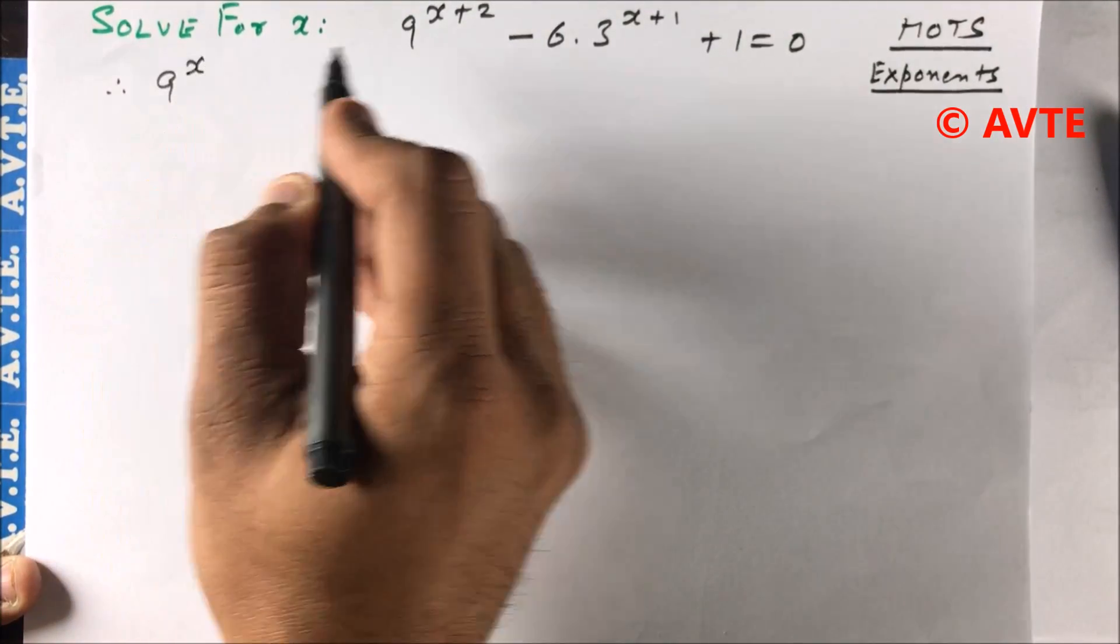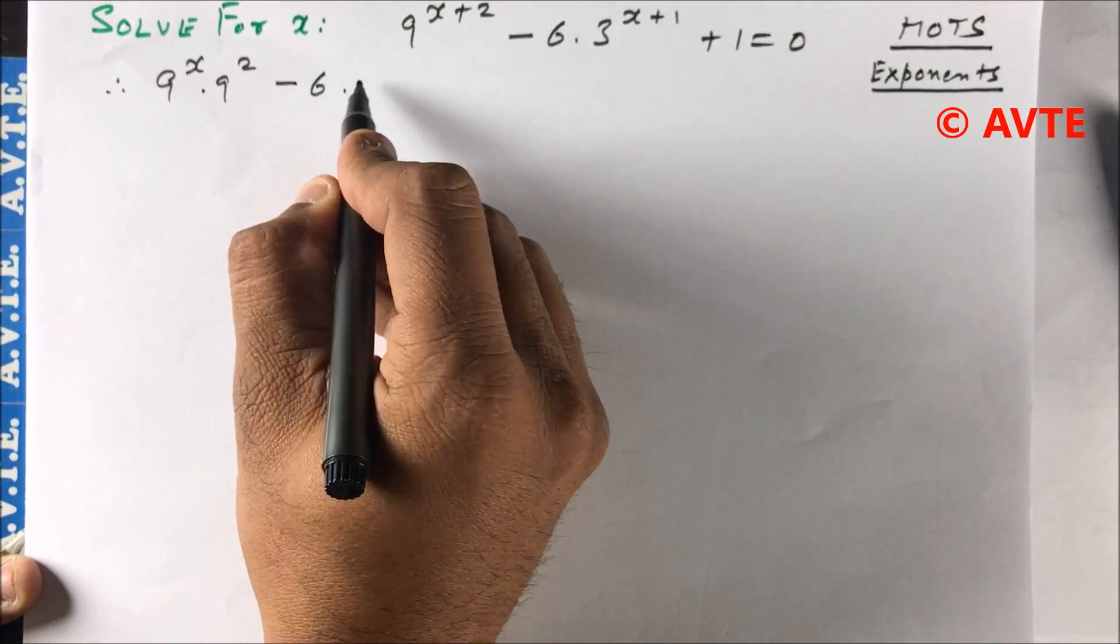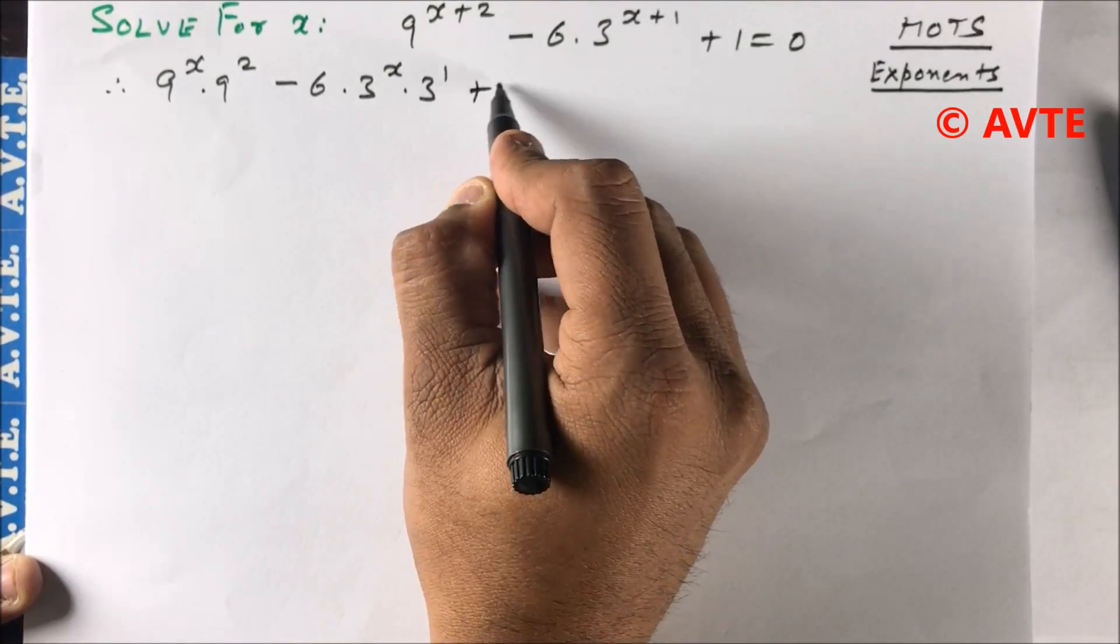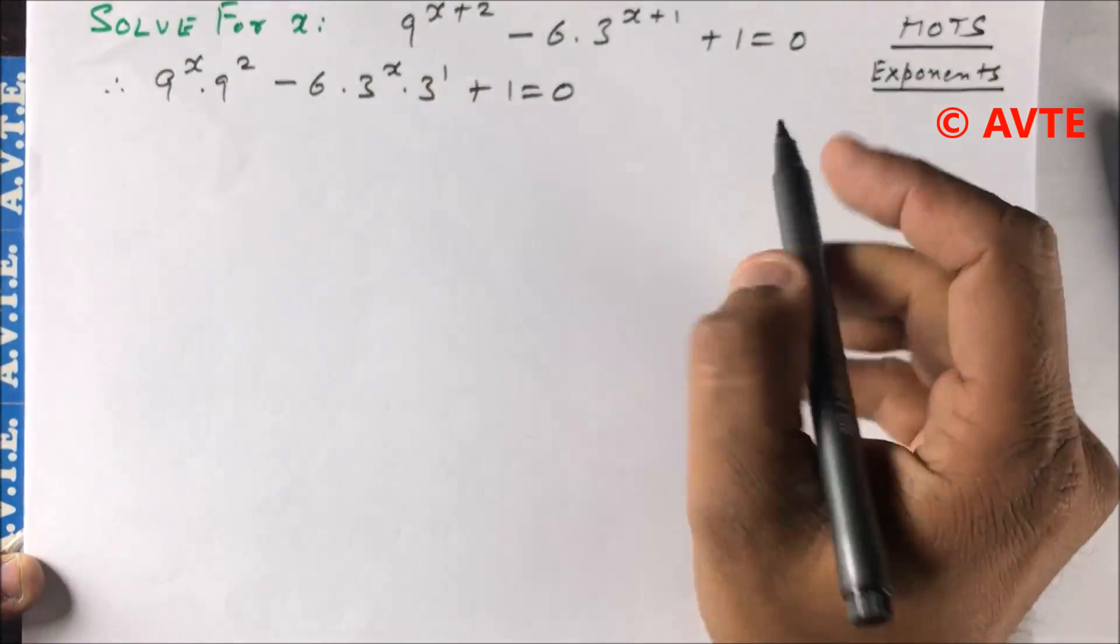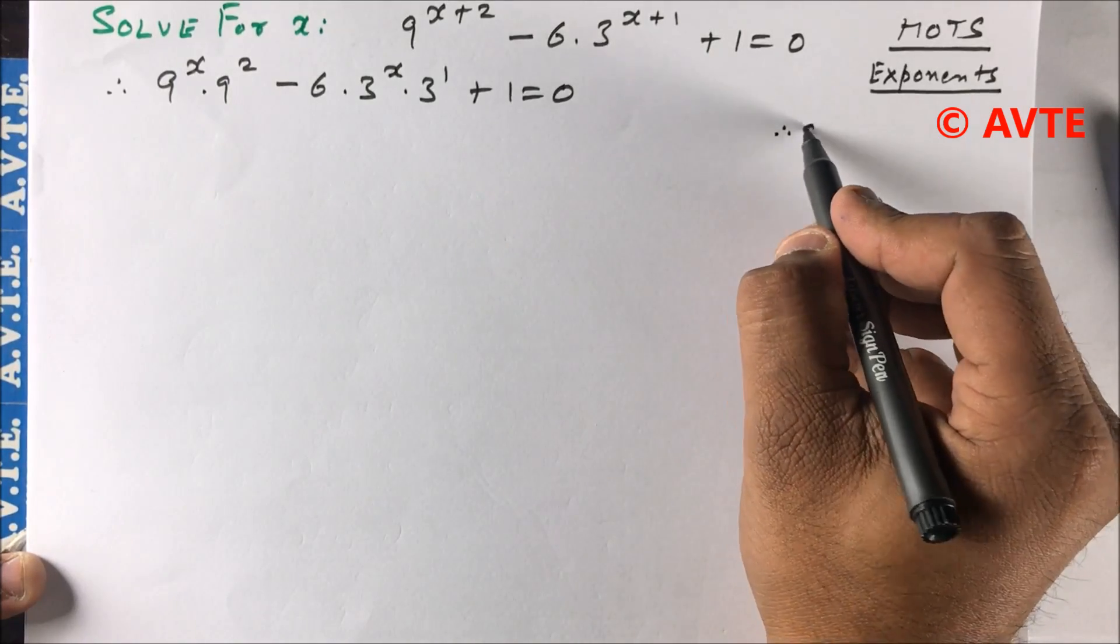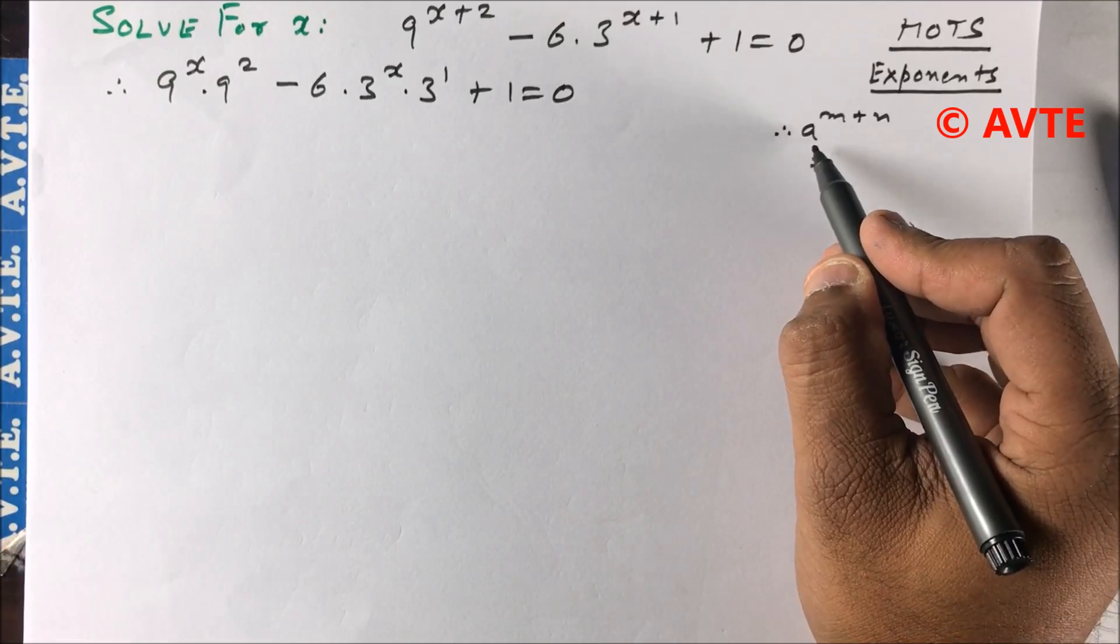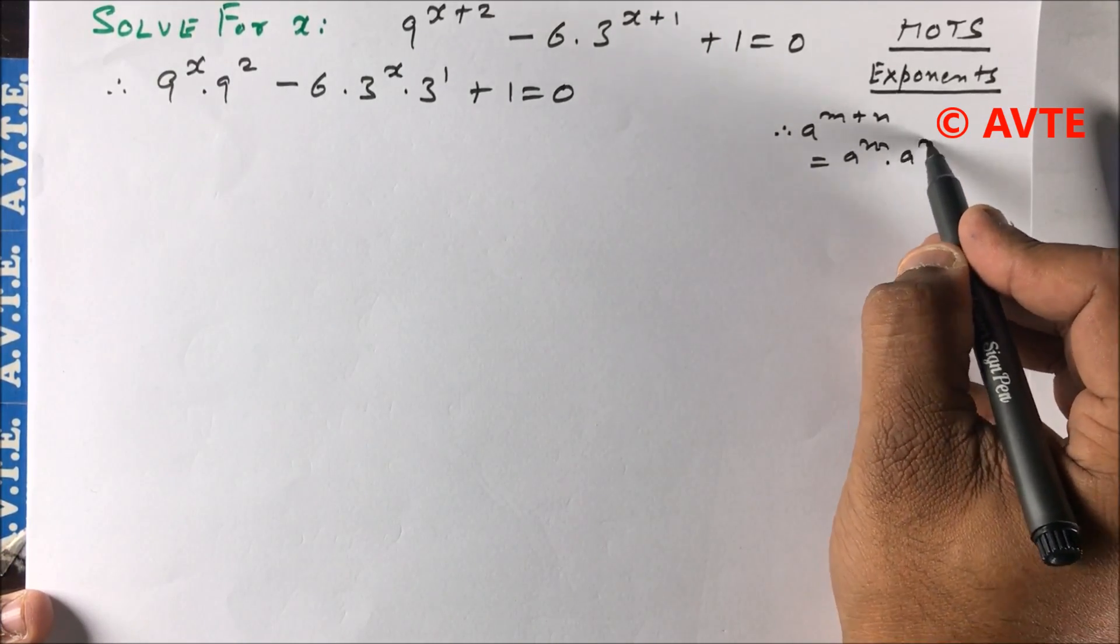So 9^(x+2) - 6·3^(x+1) + 1 = 0. Here we have applied a reverse formula: a^(m+n) = a^m · a^n.